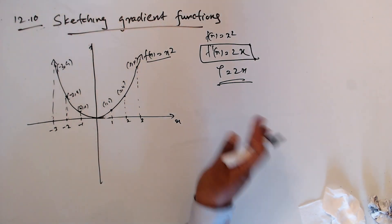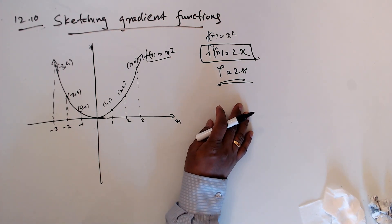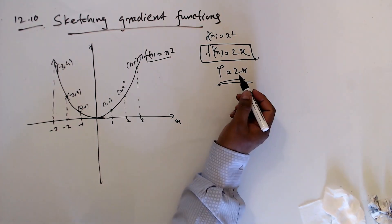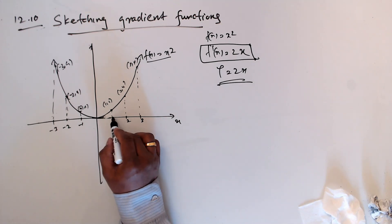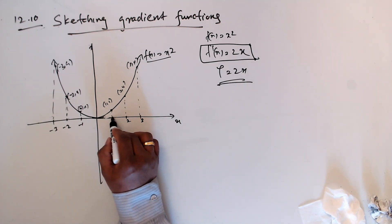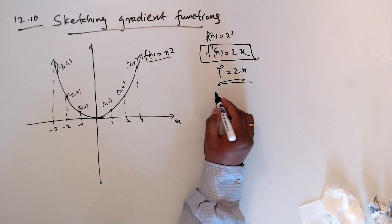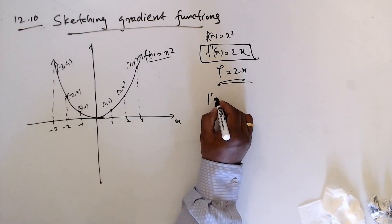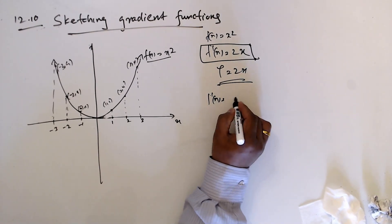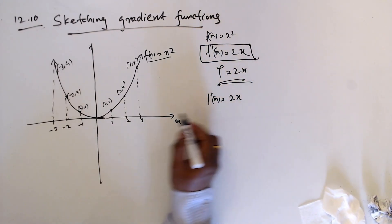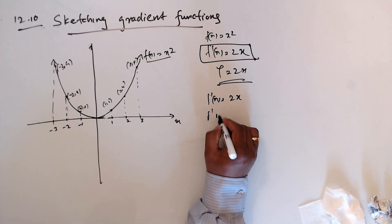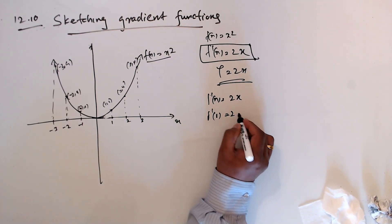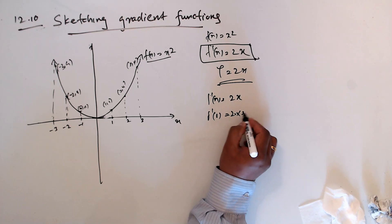Having this idea, we'll find the gradient at specific points. When x equals 1, f'(x) = 2x, so f'(1) = 2 times 1, which is 2.